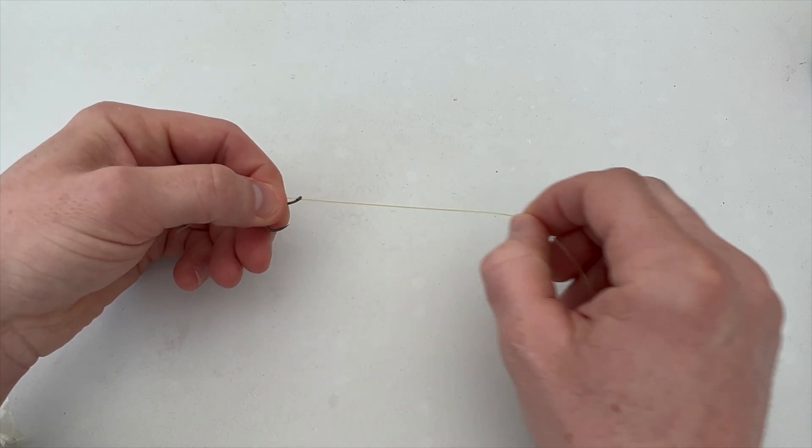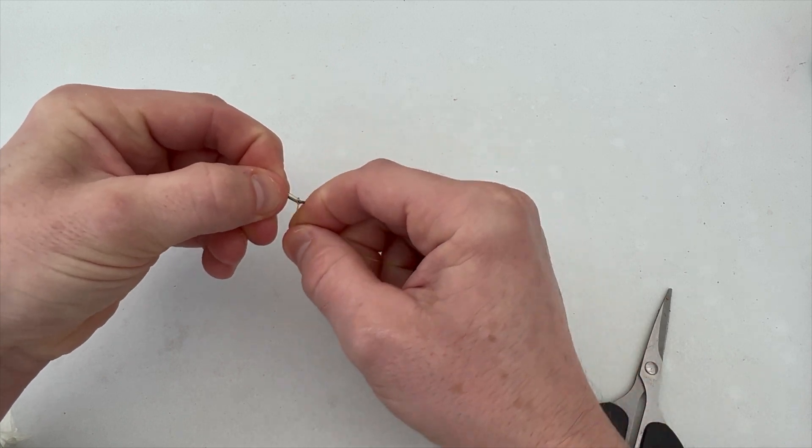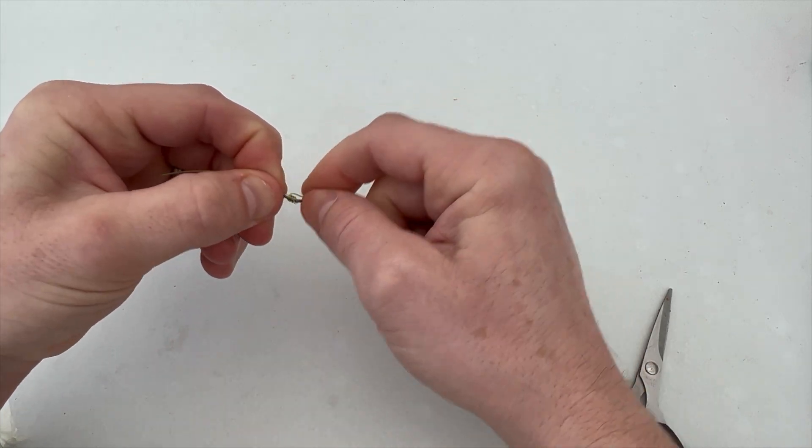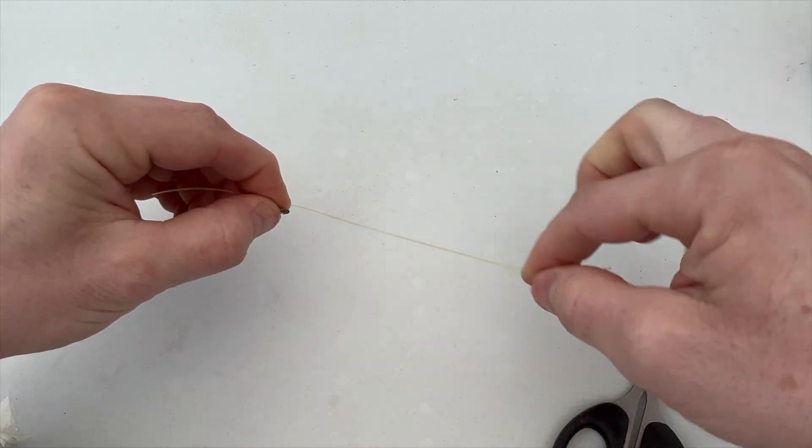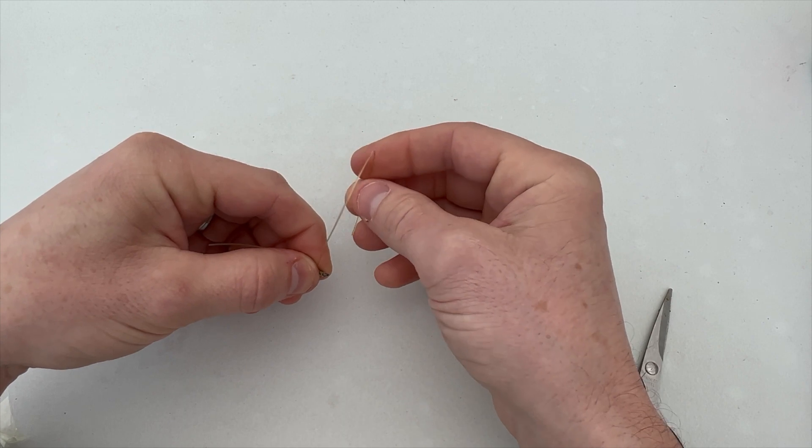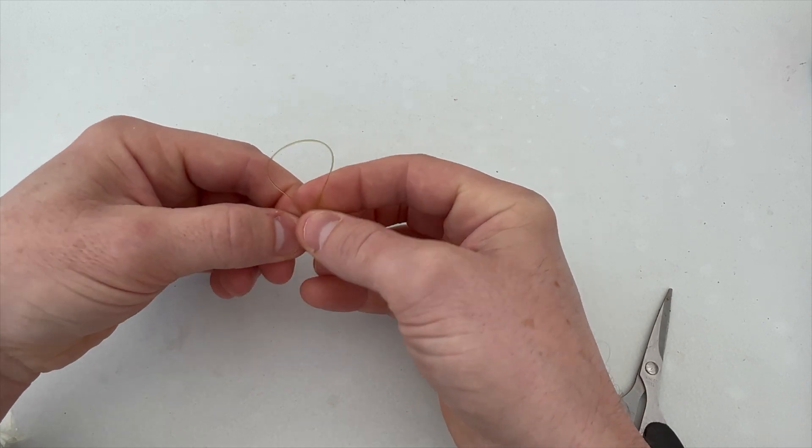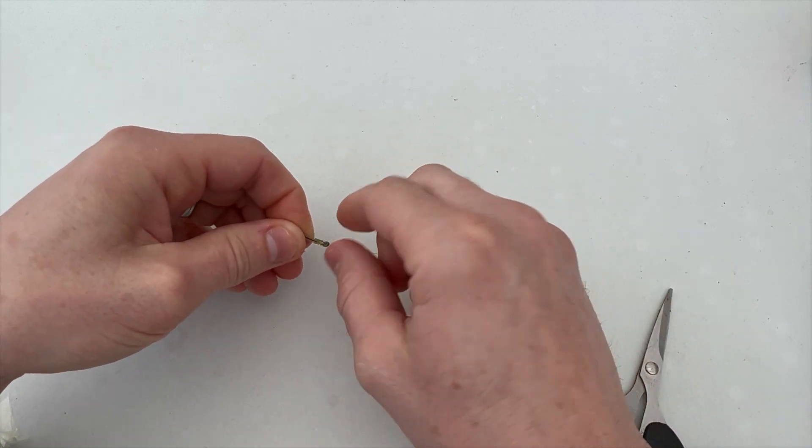We then want to make a knotless knot, wrap around probably four, five, six times, back through the eye of the hook, creating our knotless knot.